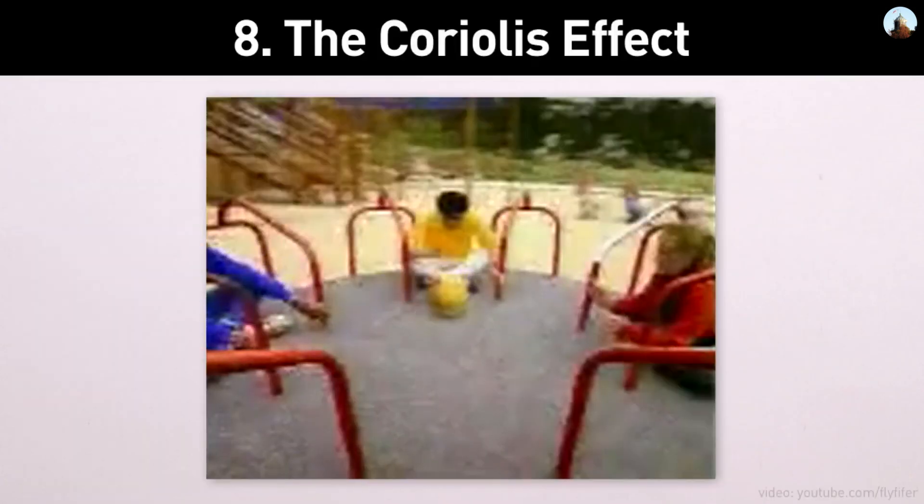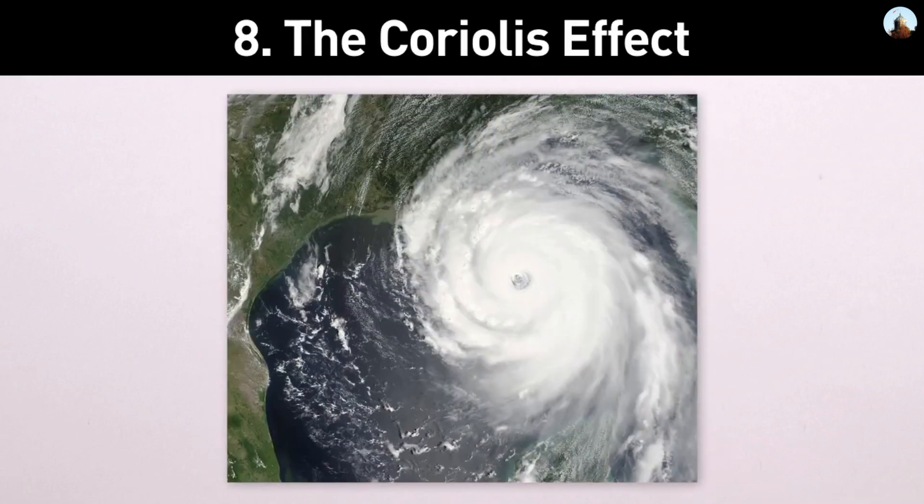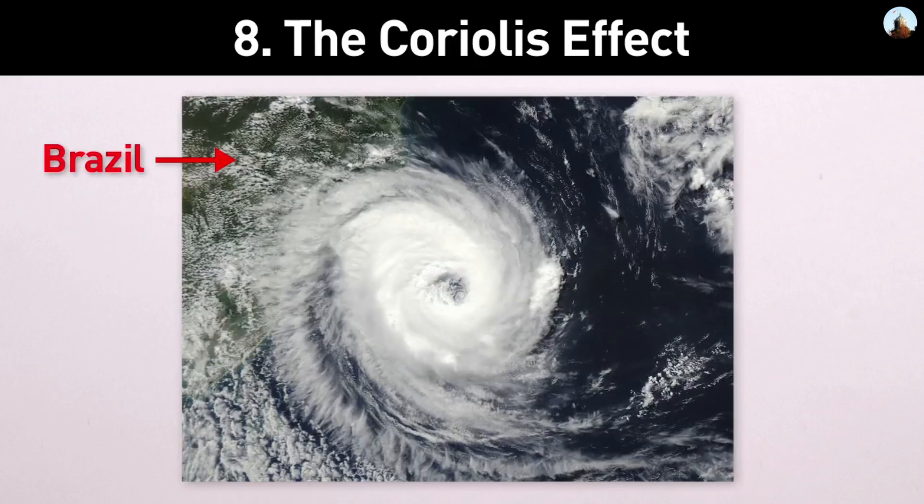8. The Coriolis effect means freely moving things like cannonballs or hurricane winds are deflected to the right, but only if you're north of the equator. If you're south of the equator, they're deflected left.